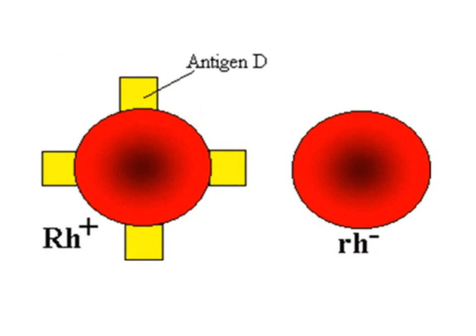An individual either has or does not have the Rh factor, or D antigen, on the surface of the red blood cells. Remember, this term strictly refers only to the most immunogenic D antigen of the Rh blood group system. The status is usually indicated by Rh positive, where Rh positive does have the D antigen, or Rh negative, where Rh negative does not have the D antigen.